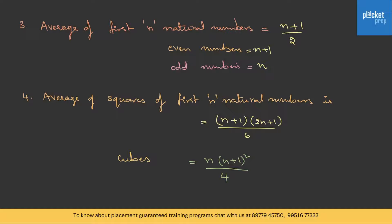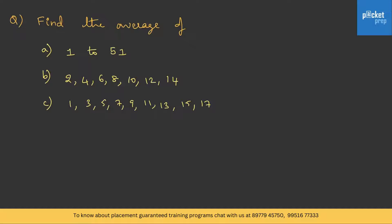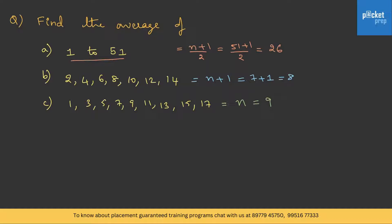Let's try a question. Find the average of 1 to 51 natural numbers: n is 51, so using (n+1)/2 = (51+1)/2 = 26. For the even numbers 2, 4, 6, 8, 10, 12, 14 — these are 7 even numbers, so average = n+1 = 7+1 = 8. For the odd numbers 1, 3, 5, 7, 9, 11, 13, 15, 17 — these are 9 odd numbers, so the average = n = 9.